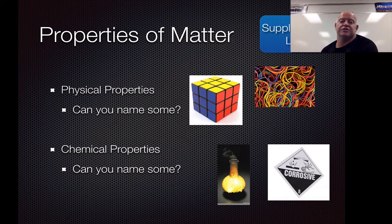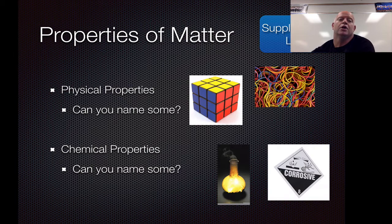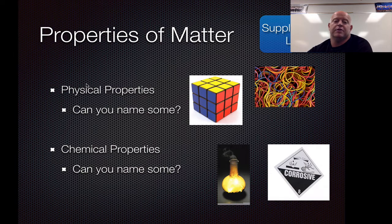Now that brings us into this idea of actually starting to look at different properties of matter and what they are and how they work. So if we start to look at properties of matter, we have two different categories: physical properties and chemical properties. So things that deal with the intermolecular forces or those chemical bonds.